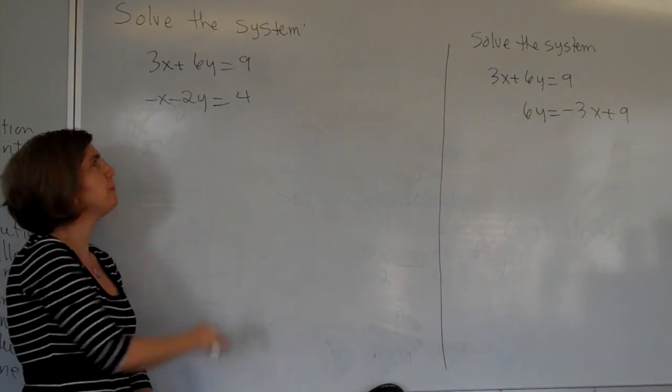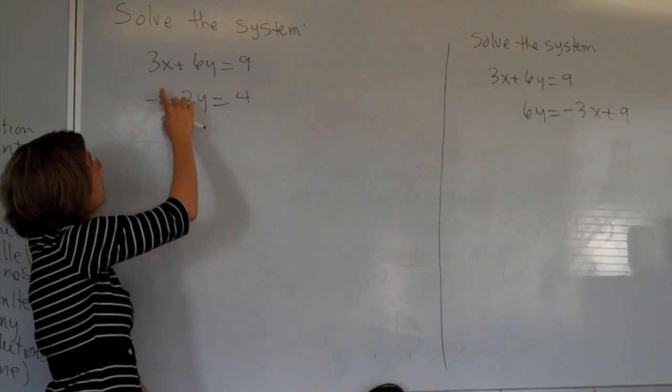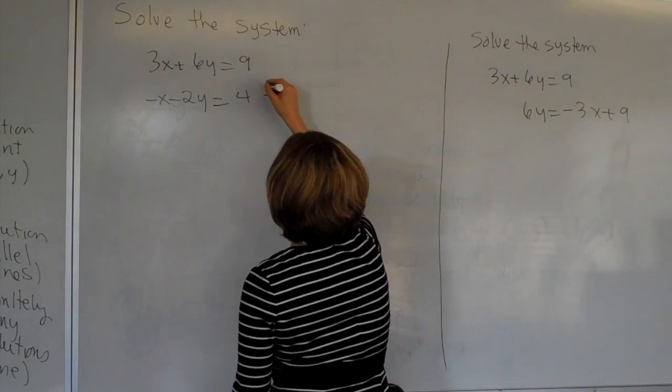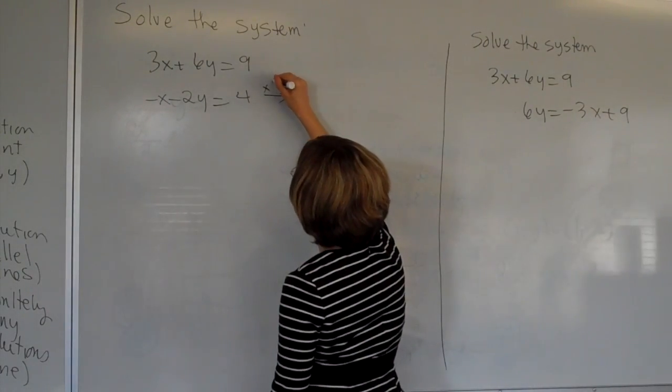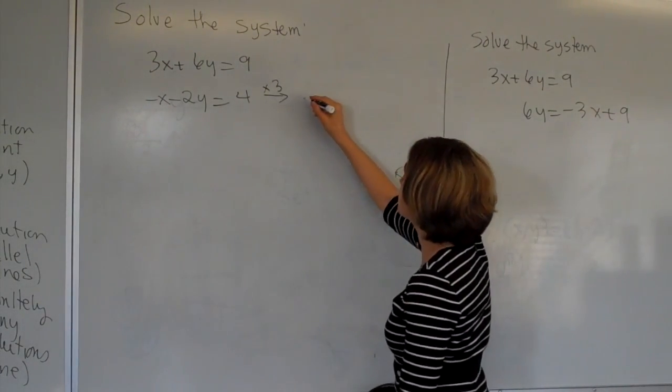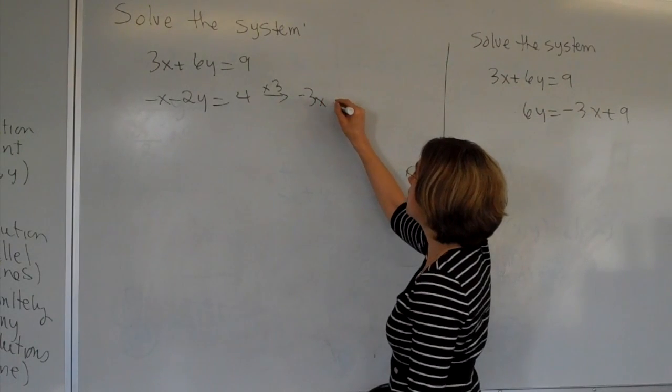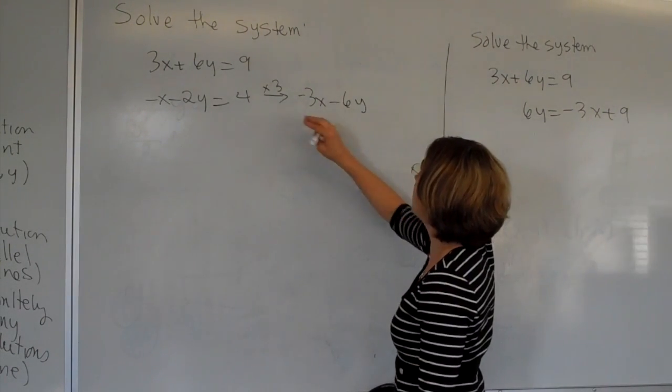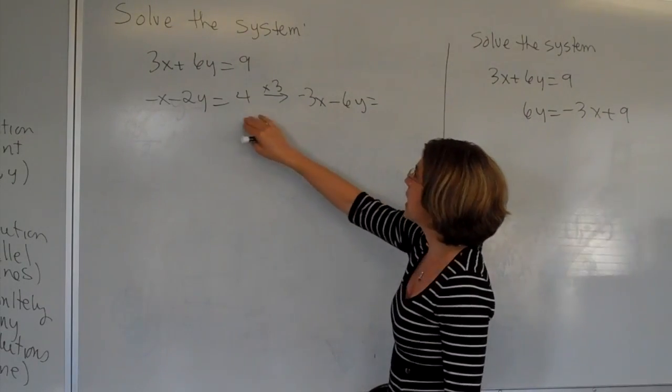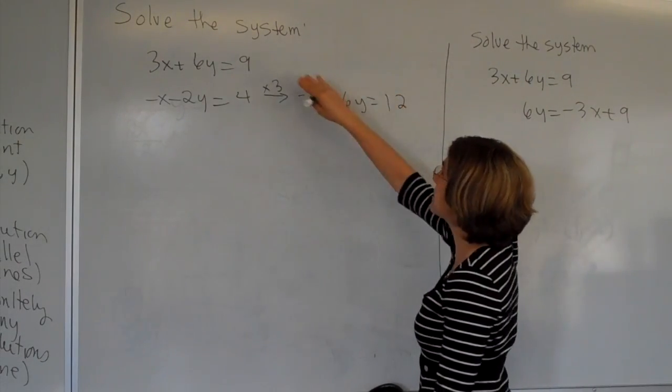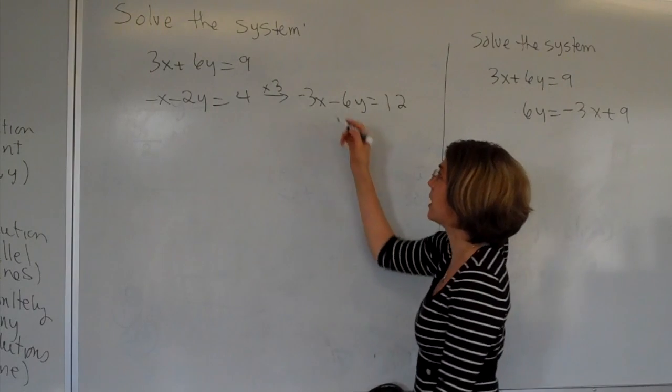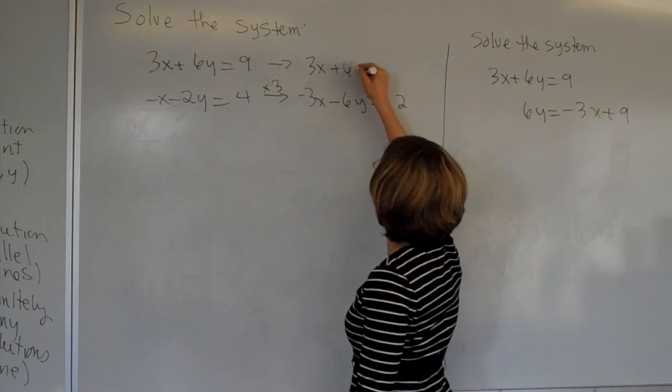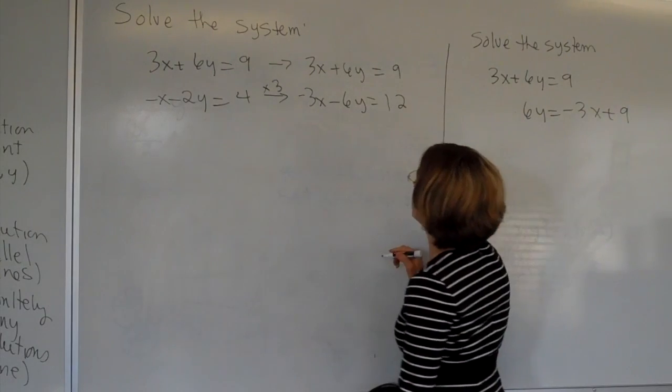And I will multiply the bottom equation only by 3, thus setting up 3x over minus 3x, which adds up to 0. So I'm going to multiply by 3, which gives me minus 3x. 3 times minus 2y is minus 6y equals 3 times 4 is plus 12. And on the top equation, I'm not doing anything to it. I'm just going to copy it on over.